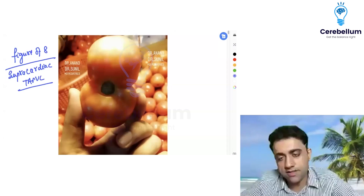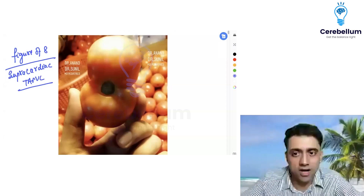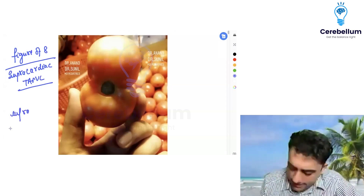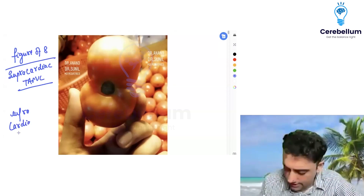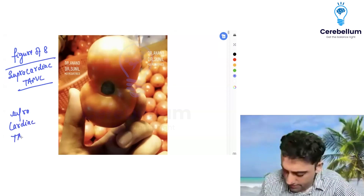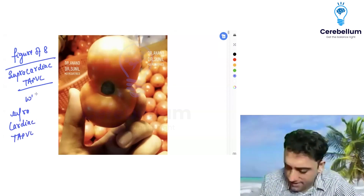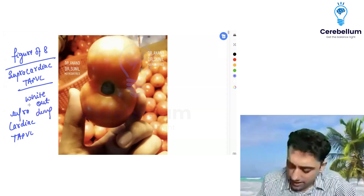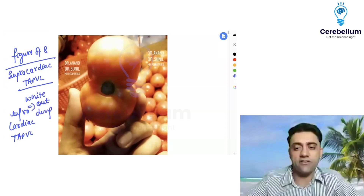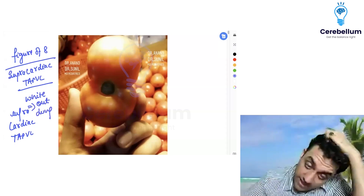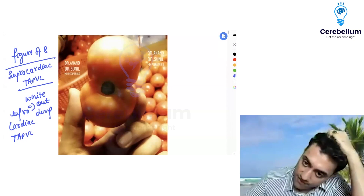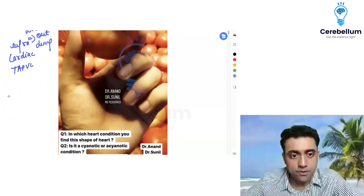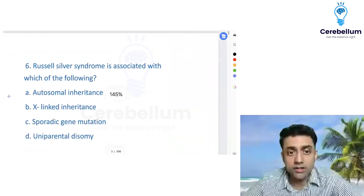Supracardiac TAPVC is a better answer because infracardiac TAPVC presents as white-out lung. Infracardiac TAPVC presents as white-out lung, whereas supracardiac TAPVC will have a figure-of-eight appearance. Remember that — number one.